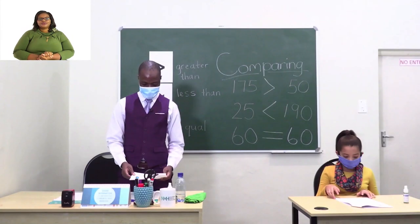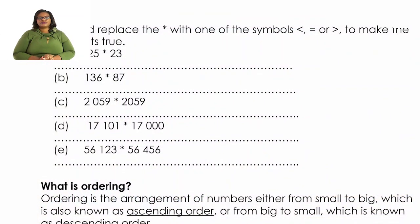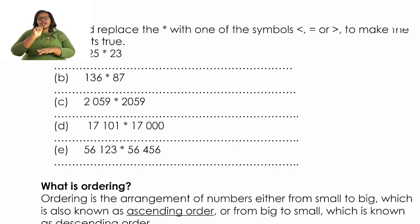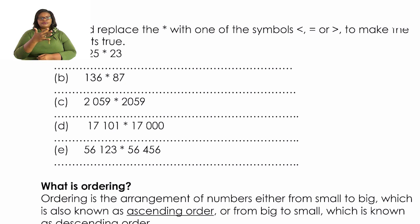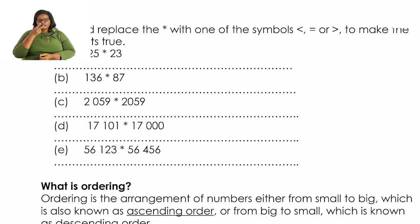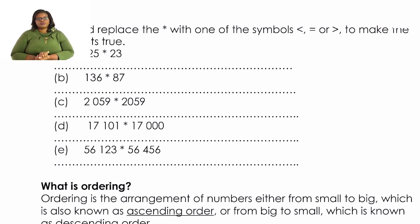Let us now go to page 13. There's an activity there. I will only do part A, then you do the rest on your own. On A you have 25 and 23. You see that 25 is bigger than 23. Then you are supposed to do the other work on your own.